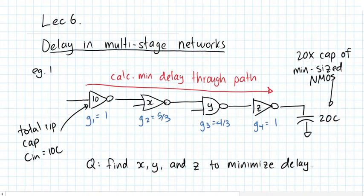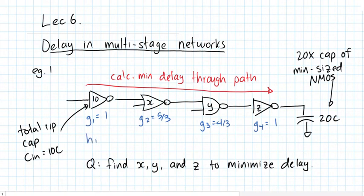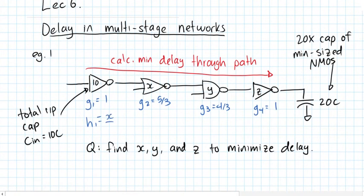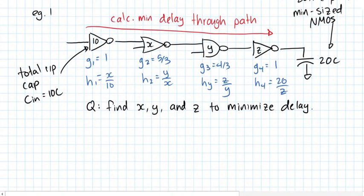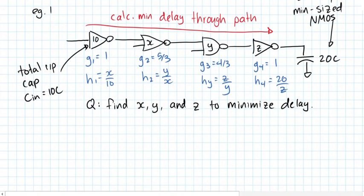We also need the parasitic delays, which we know for all these gates. We also need the electrical effort H. We don't know the electrical effort of any of these gates because we don't know the loading factors. So H1 = X/10, the electrical effort of the NOR gate is Y/X, the electrical effort of the NAND gate is Z/Y, and the electrical effort of the final inverter is 20/Z.